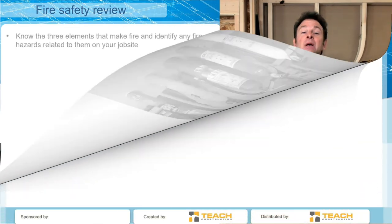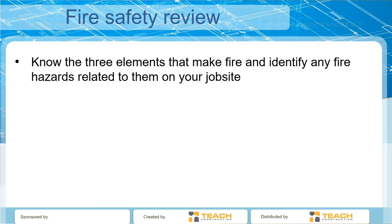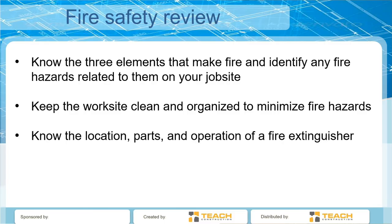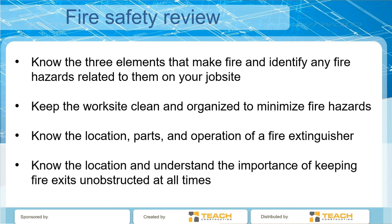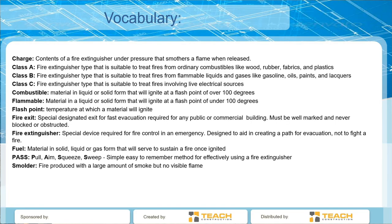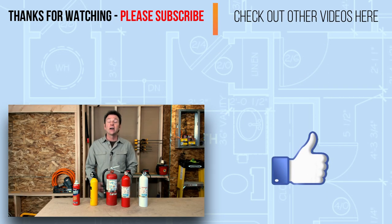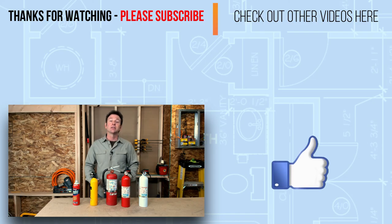Let's do a fire safety review. Know the three elements that make a fire and be able to identify anything on the job site that relates to them, and know how to prevent them from being a fire risk. Keep the work site clean and organized — housekeeping is a big deal and a great way to minimize fire hazards. Know the locations, parts, and operation of all fire extinguishers, and make sure they have up-to-date tags. Know the location and importance of keeping fire exits unobstructed at all times — it's the law. I hope you've learned something about fire hazards, what causes fire, and things we can do to protect ourselves and prevent fire.